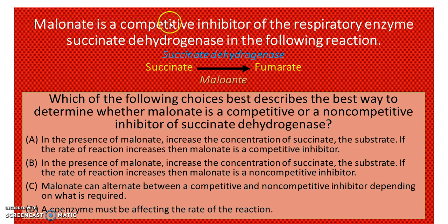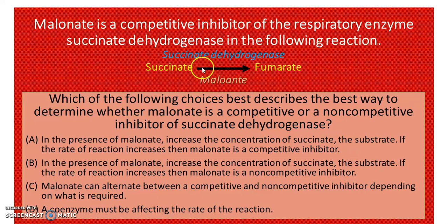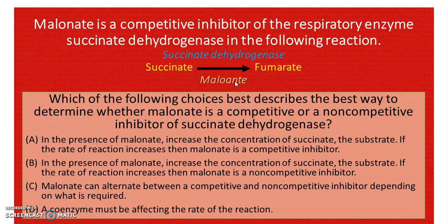The question is: malonate is a competitive inhibitor of the respiratory enzyme succinate dehydrogenase. In the following reaction, succinate is getting converted to fumarate; succinate dehydrogenase is the enzyme, and malonate is a competitive inhibitor. Which of the following choices best describes the best way to determine whether malonate is a competitive or a non-competitive inhibitor of succinate dehydrogenase?